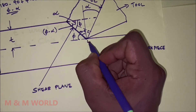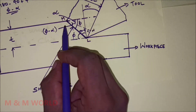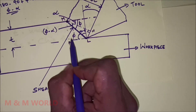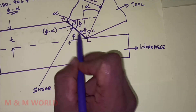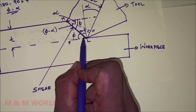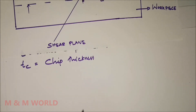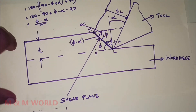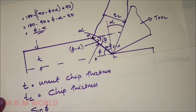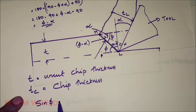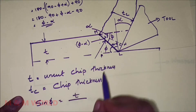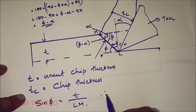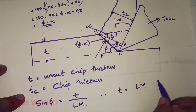Now consider triangle LMN. What will be the value of sine phi? Sine phi is equal to the opposite side T divided by the hypotenuse LM. Therefore T is equal to LM times sine phi.